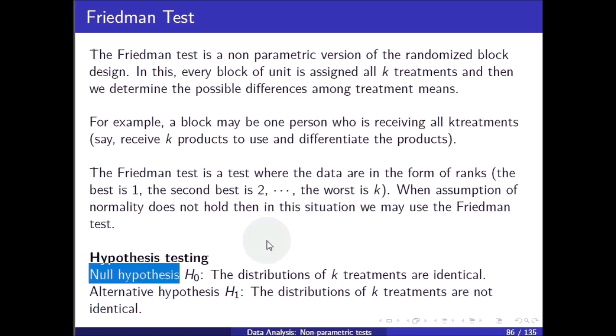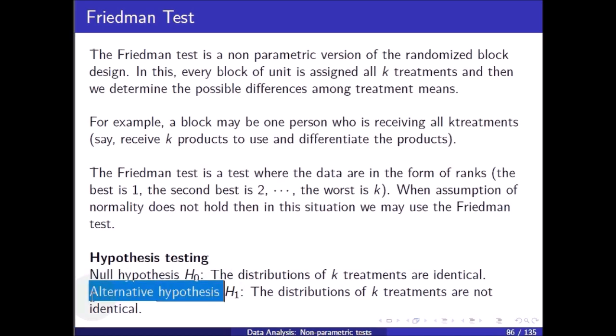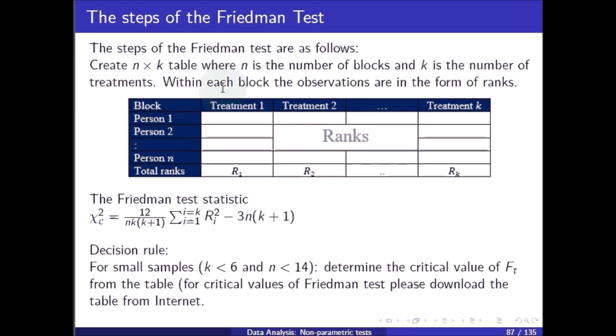The hypothesis testing is: null hypothesis — the distributions of k treatments are identical; and alternative hypothesis — the distributions of k treatments are not identical.